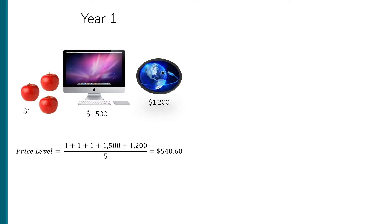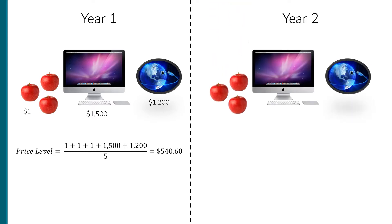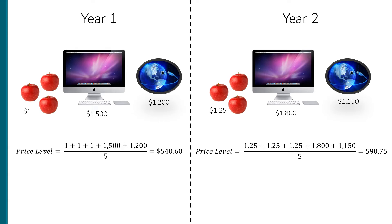Then we would look and see what the prices are next year. Let's say that apples went up to $1.25 each, the computer is now $1,800, and internet goes down in price to $1,150. Now the average price of these things is $590.75. Even though internet service is cheaper, the average price has gone up 9.3%, and so we would say this small economy has experienced 9.3% inflation, which is pretty high.